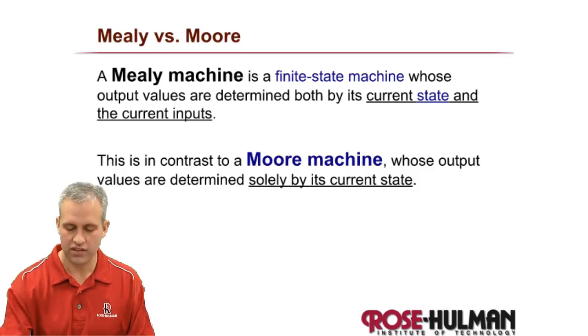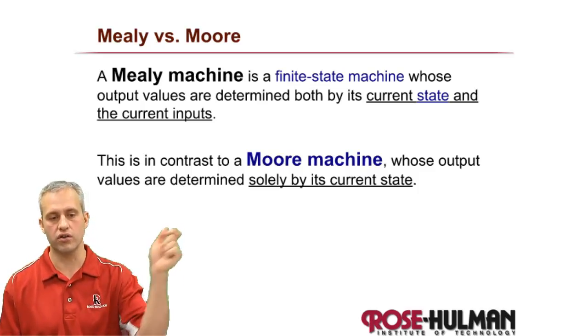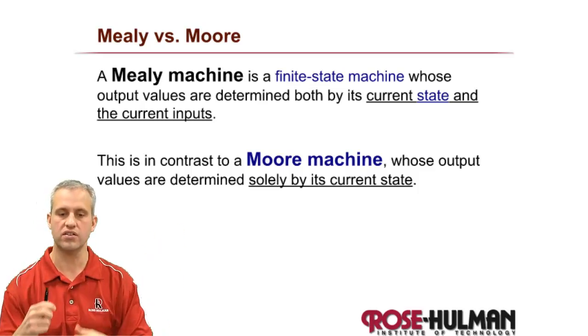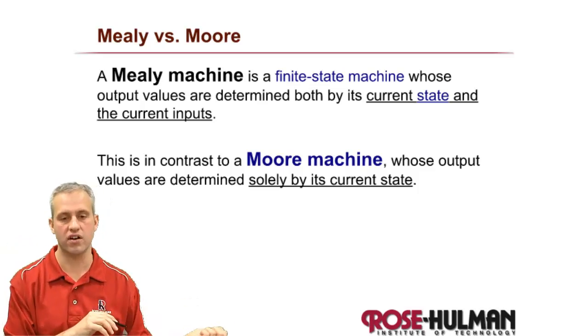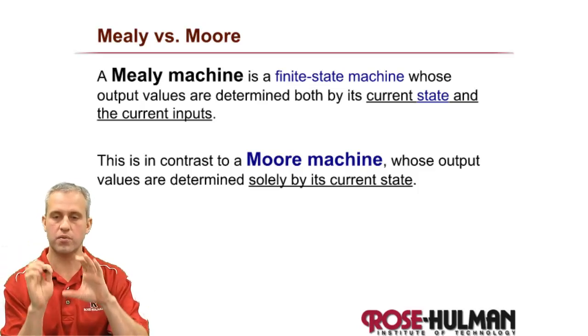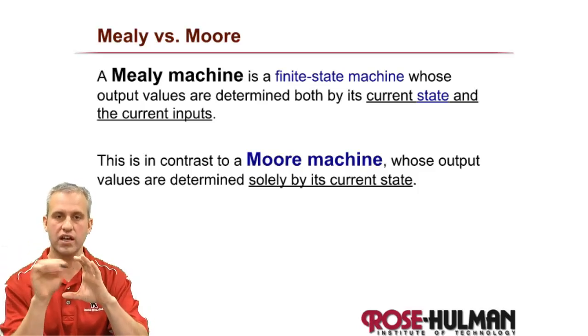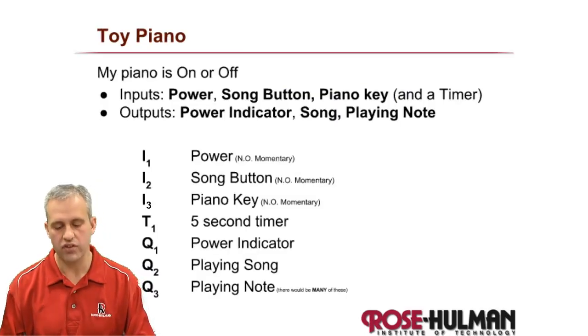The example we're going to do is a children's toy. You know, you turn it on, it's in one state, you can interact with buttons and things, and then turn it off, it's in a different state. Obviously that on state, the outputs depend not only on the fact that it's on but what you're hitting while it's on. So we're going to do a little toy piano.